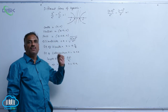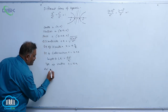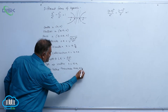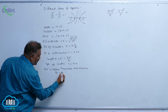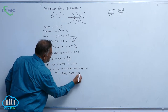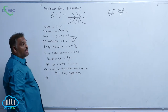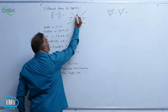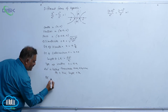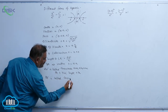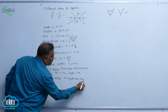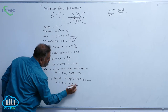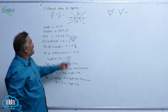Now, AA' is called the transverse axis — it lies along the x-axis, so its equation is y = 0 and its length is 2a. For BB', observe that the y-axis does not intersect the curve, so we select two points B and B' such that BB' is called the conjugate axis, lying along the y-axis.